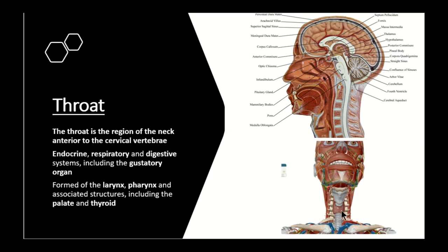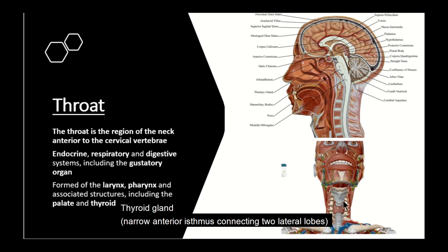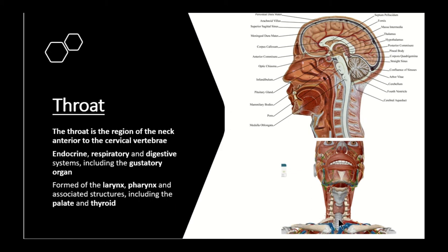Going further down, we can see the thyroid gland, which has a narrow anterior isthmus and two large lateral lobes. The isthmus is roughly at the level of the second and third tracheal cartilaginous rings. Below the larynx, we can see the trachea with its C-shaped cartilaginous rings. The larynx continues down as the airway, and the food passage — the pharynx — is always behind the airway.